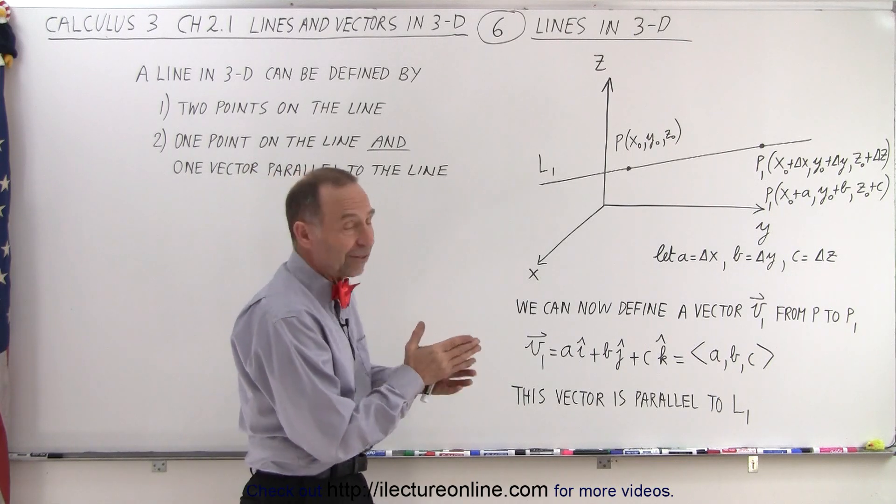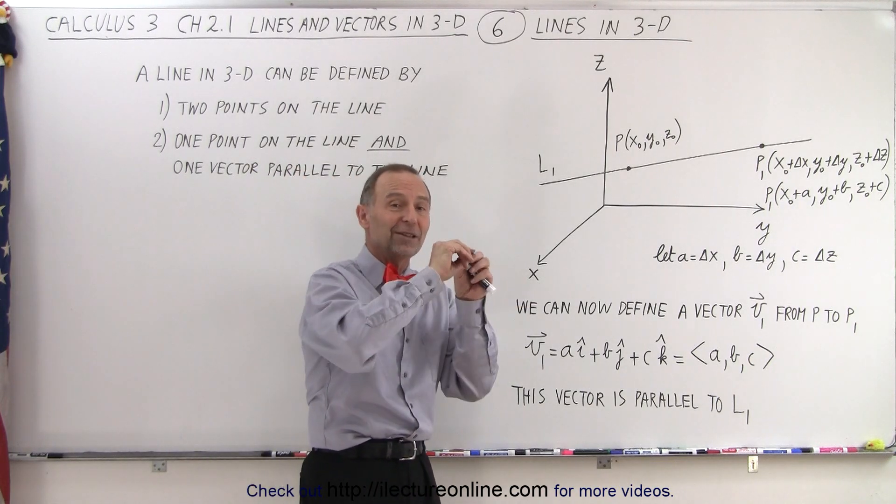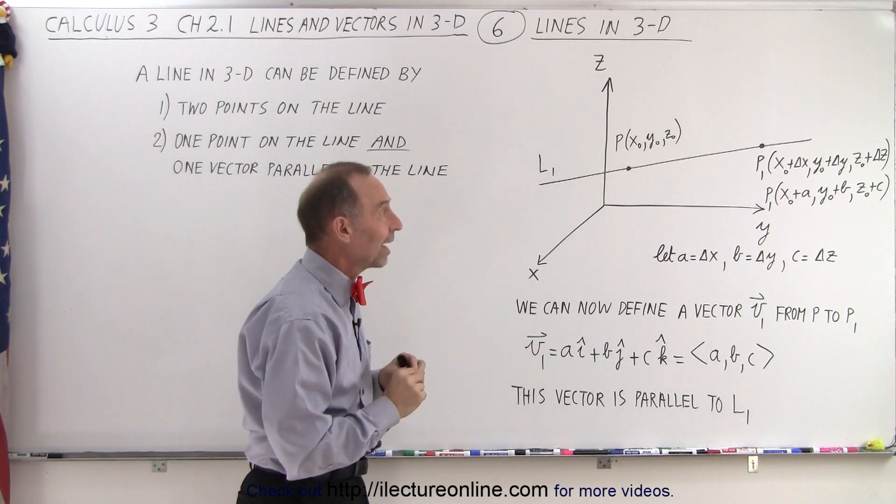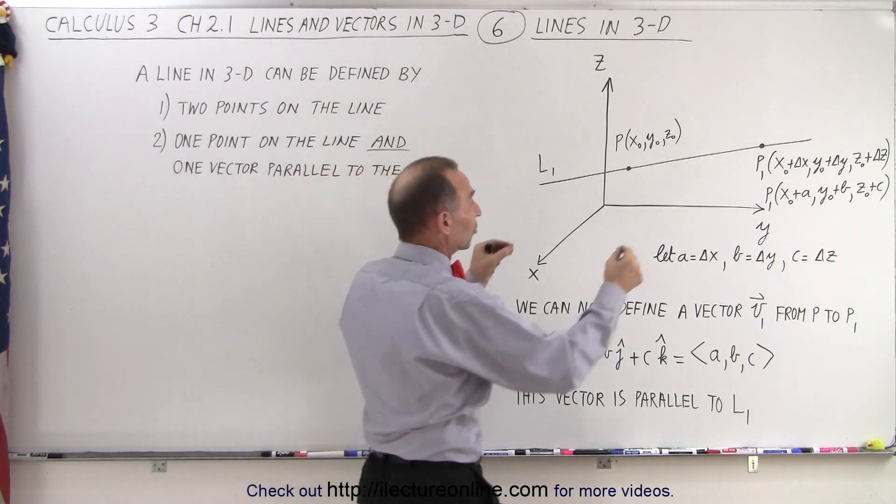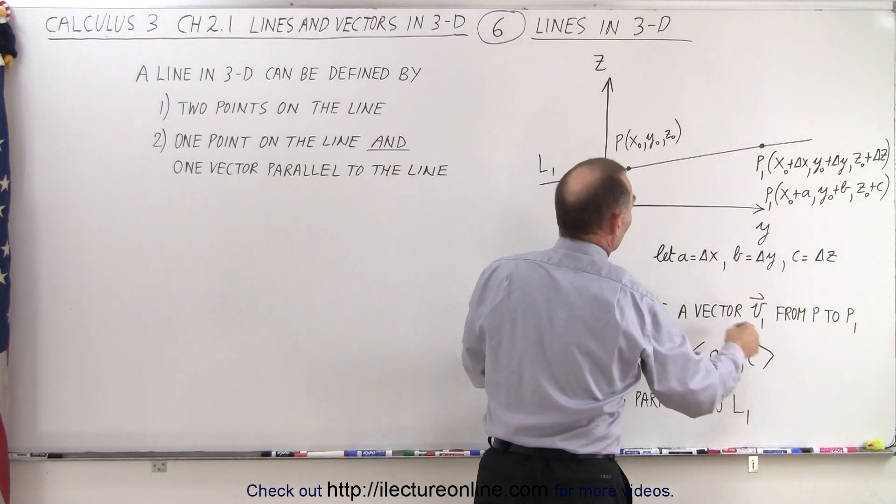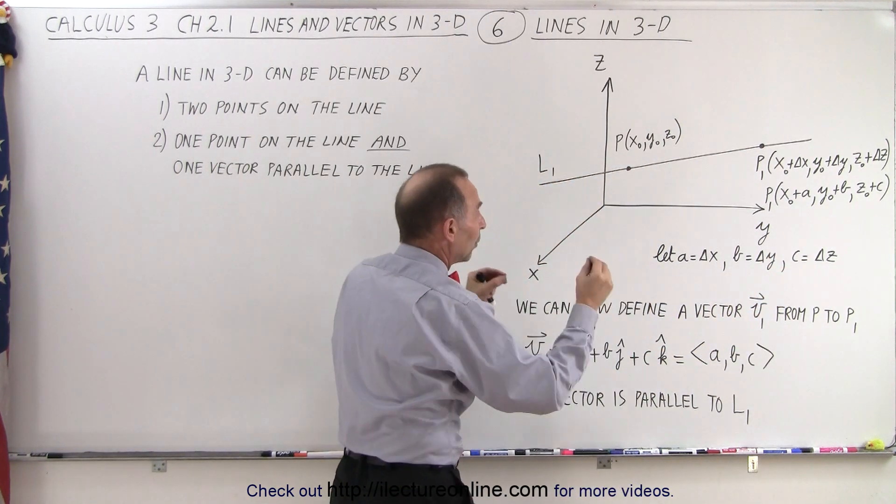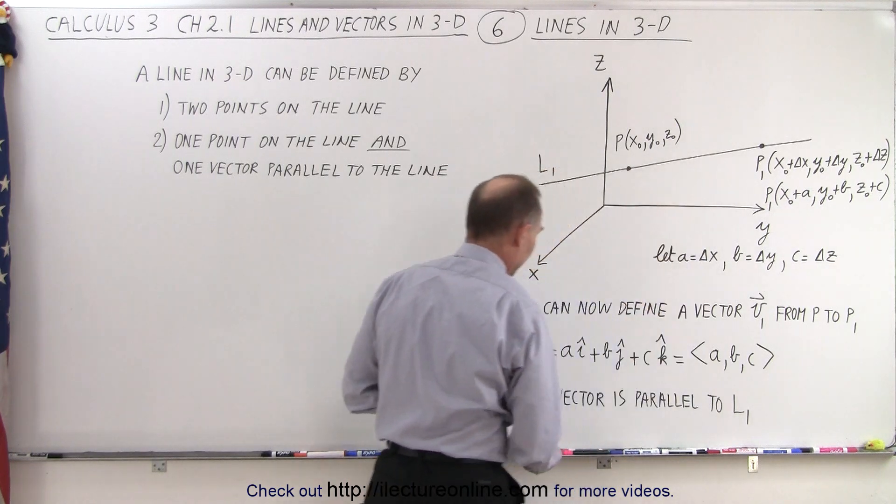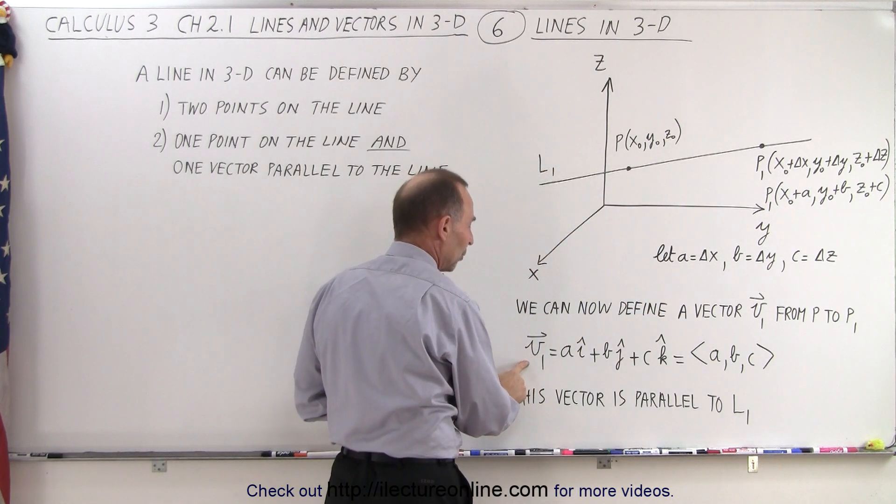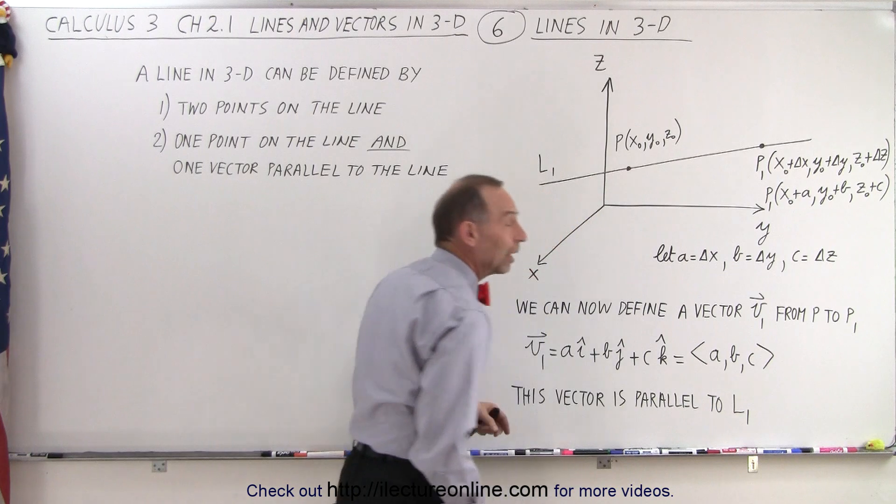Now, on top of that, it's actually right on top of the line, right? It's in the same location as the line, but it doesn't matter because vectors can be moved anywhere we like. So again, we can safely say that that vector, no matter where we put it, it will always be parallel to the line. So that means that this vector V1 is parallel to line L1.